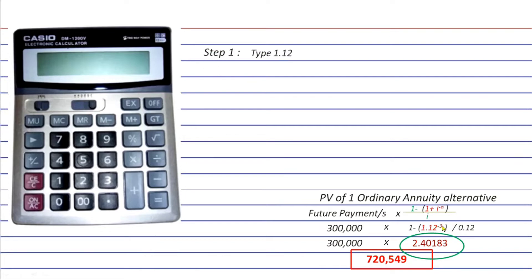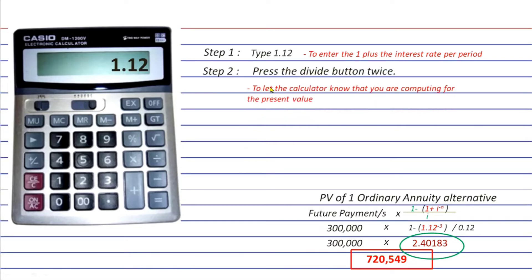Step 1, type in 1.12. This is done to input the 1 plus effective interest rate per period. Step 2, press the divide button twice. This is done to let the calculator know that you are computing for the present value. Step 3 is hit the equals button three times.